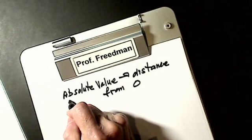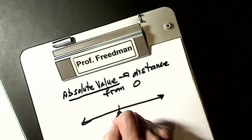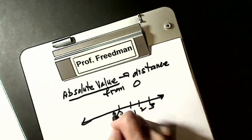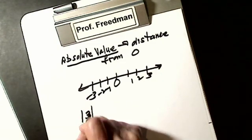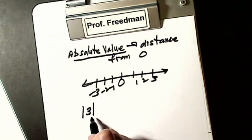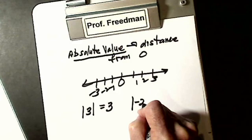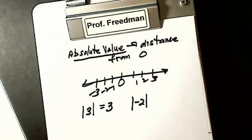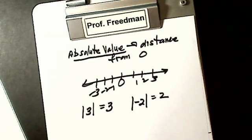Now we have to discuss absolute value. Absolute value is the distance from zero. On a number line, positives are to the right and negatives are to the left. The absolute value of 3 — using up-and-down straight bars, not parentheses — means the distance from 0 to 3, so it's 3. The absolute value of negative 2 is the distance from 0 to negative 2, so the answer is 2. Distance is always positive — if you drive 500 miles north or south, you drove 500 miles. So absolute value is always positive.